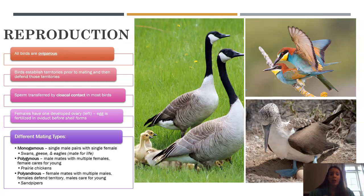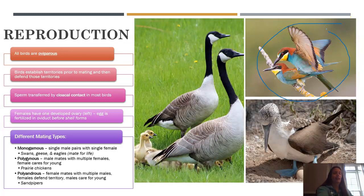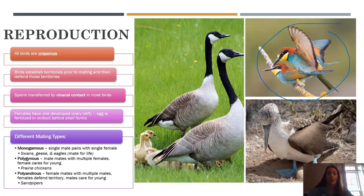In terms of reproduction, all birds are oviparous. They establish territories prior to mating and then defend them. They transfer sperm via cloacal contact — the male gets on top of the female and puts his sperm in her cloaca. Females only have one developed ovary, the left side. There are also many different mating types: monogamous with just a male and female, polygamous with one male and multiple females, or polyandrous where a female mates with multiple males.